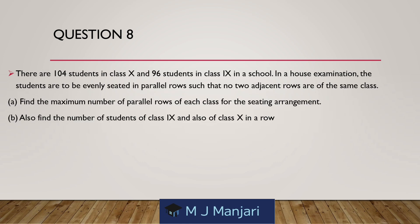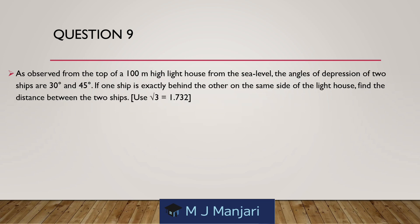Question 8. There are 104 students in class 10 and 96 students in class 9 in a school. In a house examination, the students are to be evenly seated in parallel rows such that no two adjacent rows are of the same class. Find the maximum number of parallel rows of each class for the sitting arrangement. Also find the number of students of class 9 and class 10 in a row.